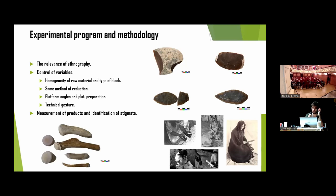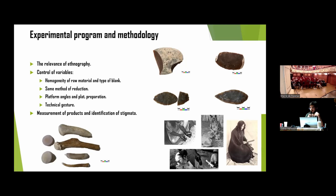Regarding the methodology and experimental program, one of the things we considered most important was good control of variables. We ensured homogeneity of raw material — very good quality chert — and the same type of blank: cortical flakes and cortical spalls. Also the raw material of the tools: I used reindeer antler for the punches and billets. We also used the same method of reduction by biface, and always kept the same platform angles and platform preparation operations.